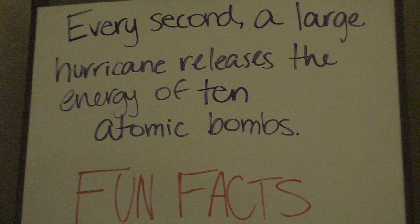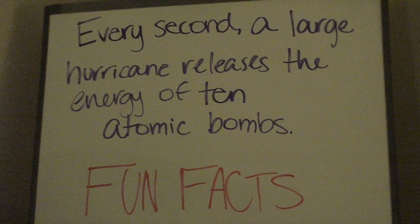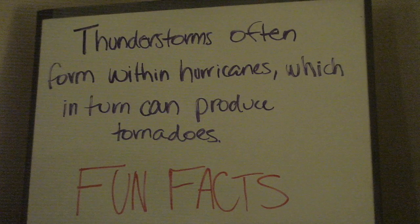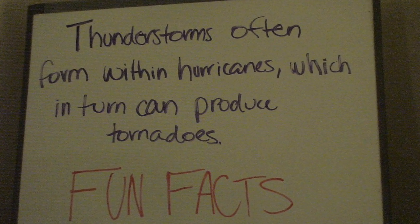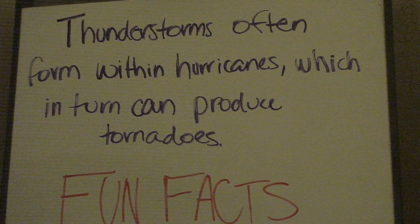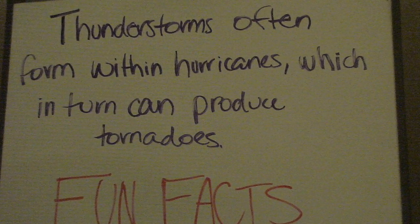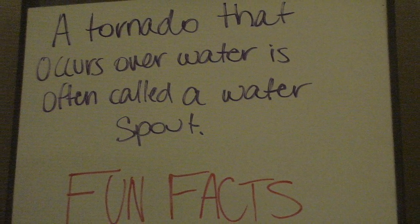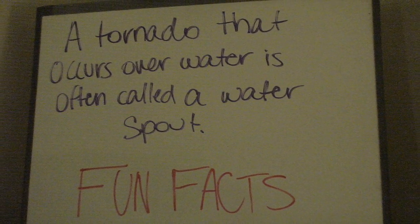Every second, a large hurricane releases the energy of 10 atomic bombs. Thunderstorms often form within hurricanes, which in turn produce tornadoes. A tornado that occurs over water is often called a water spout.